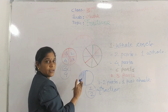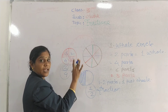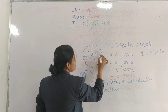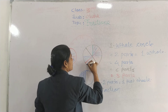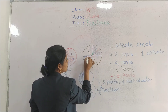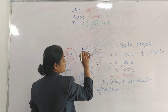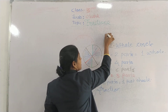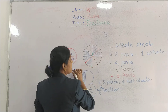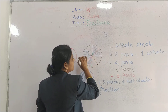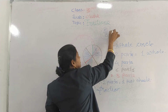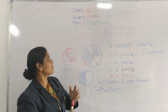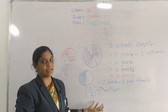अब देखो यहाँ पर eight parts दिये हुए हैं। एक circle के हमने eight parts बनाए। अब इसमें से कितने part को shaded किया है? Total कितने parts हैं? Eight। कितने shaded किये? One, two, three, four, five — five shaded। तो fraction हो गया five by eight। यह हो गया हमारा Fraction।